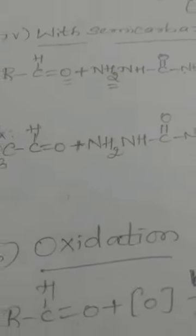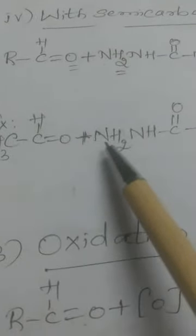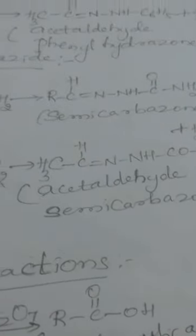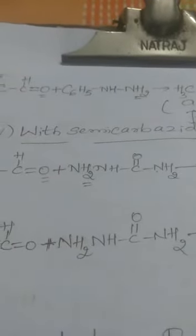Taking acetaldehyde CH₃CHO with semicarbazide NH₂NHCONH₂: O and H₂ are eliminated as water, and the product formed is CH₃CH=N–NH–C(=O)–NH₂ plus H₂O — acetaldehyde semicarbazone. These are the four condensation reactions: with hydroxylamine, hydrazine, phenylhydrazine, and semicarbazide. We have covered addition and condensation reactions; oxidation reactions will be discussed in the next class.